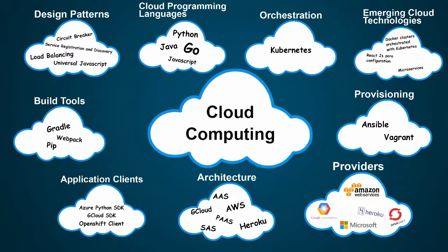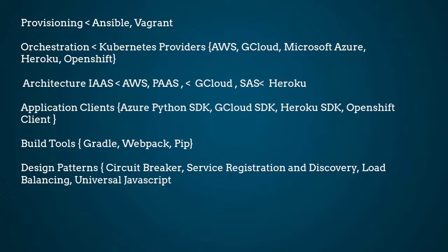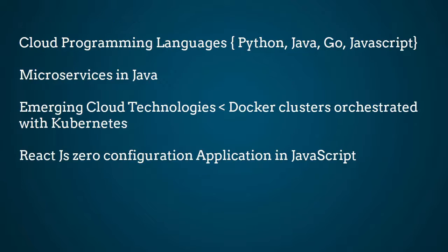To implement applications with these design patterns, we will need to use build tools. For a Java application we will use Gradle. For a JavaScript application we will use Webpack. And for a Python application we would use PIP. We will create code in these programming languages: Python, Java, Go, and JavaScript.